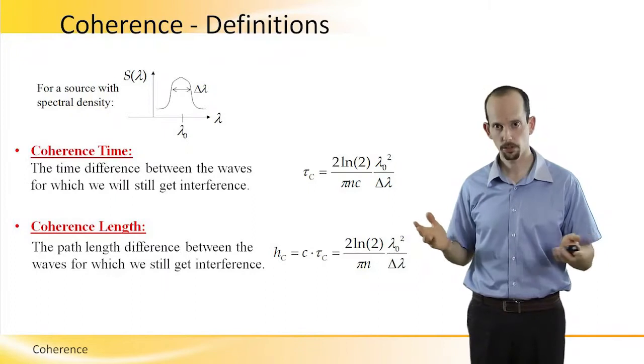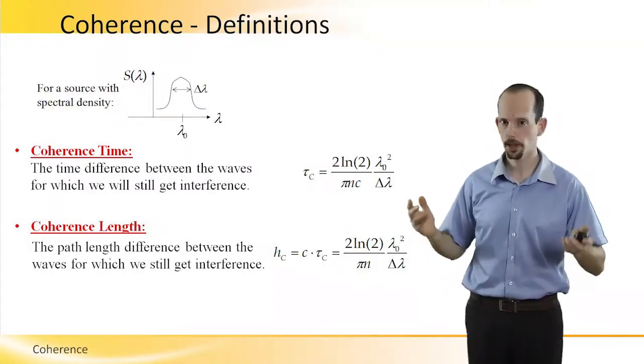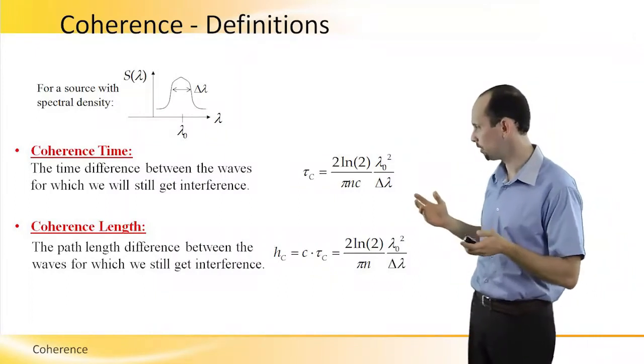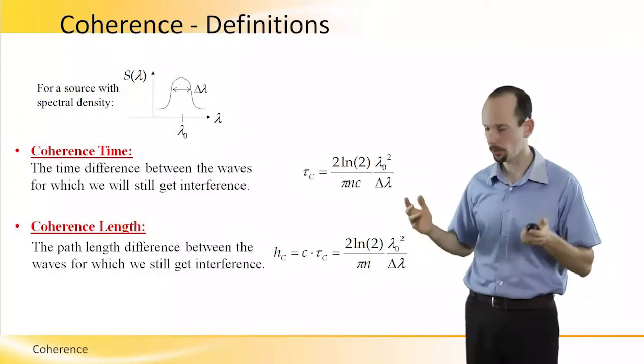So, here are the definitions of coherence. For a source with a certain spectral density, and here you can see a graph of the spectral density as a function of lambda, which is the wavelength of the source.